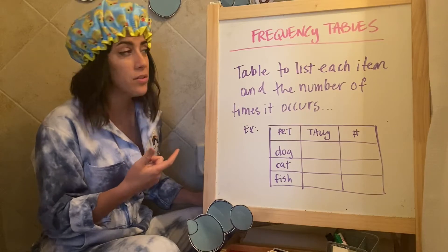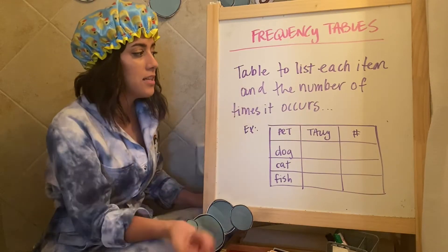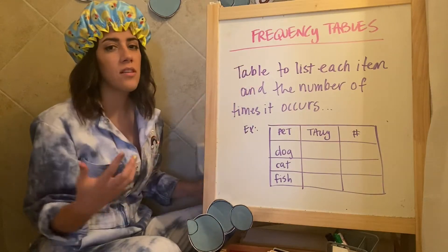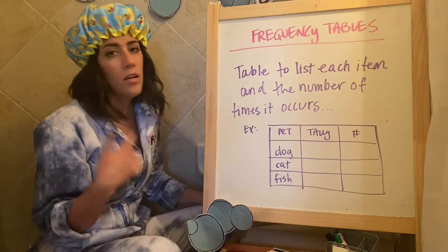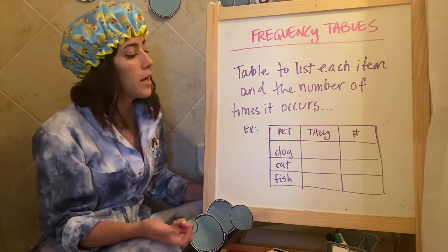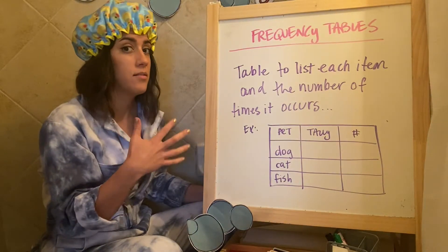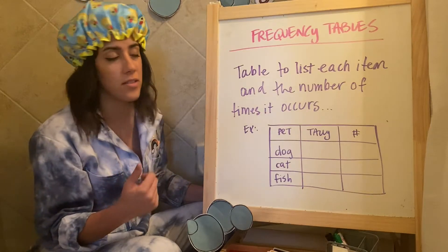Frequency tables just means a table to list each item and the number of times it occurs. So frequency is just like a big fancy word to say number of times something happens, or number of times somebody says a class might say they have something.